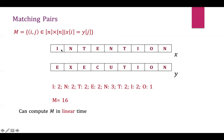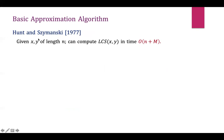Let m denote the total number of matching pairs between x and y. Here there are 16 matching pairs, and we can compute m in linear time. In 1977, Hunt and Szymanski gave an algorithm that computes the exact LCS in time linear in the number of matching pairs. We will use this as a component in our basic approximation algorithm.